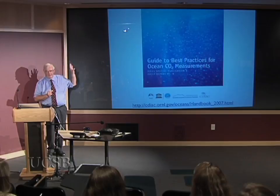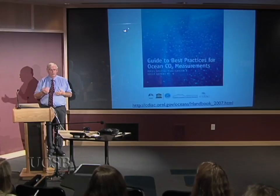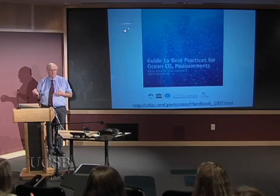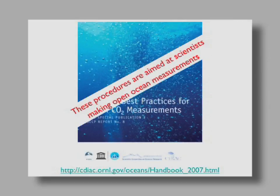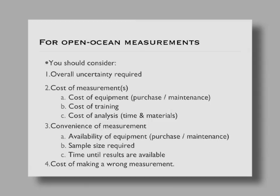There's a book, The Guide to Best Practices for Ocean CO2 Measurements, that gives in gory detail recipes for making all CO2 measurements related to seawater. But these procedures are aimed at scientists making open ocean measurements — typically looking at CO2 coming into the ocean from the atmosphere and quantifying how much that is changing interannually, or over a 10-year period. So you need low uncertainties.